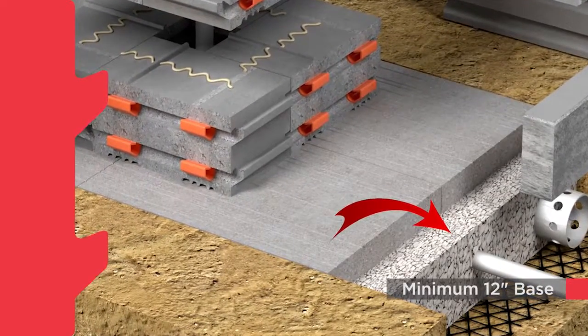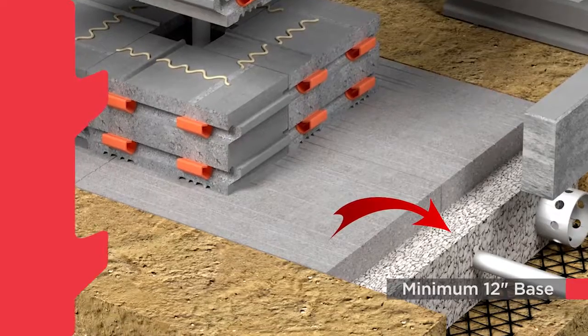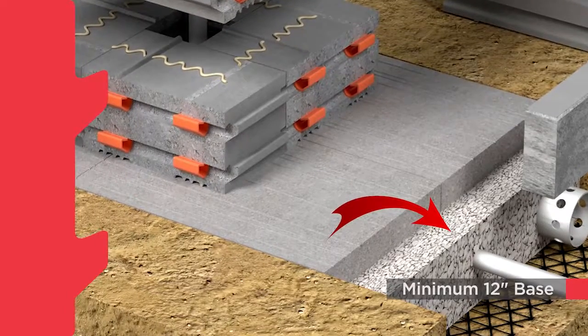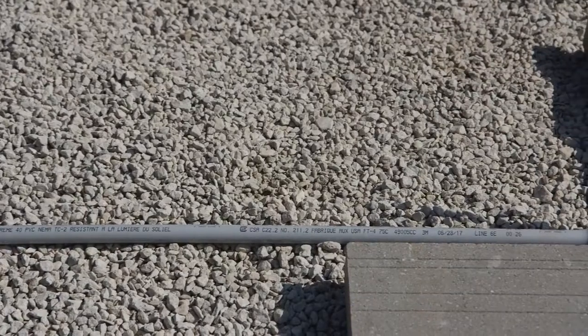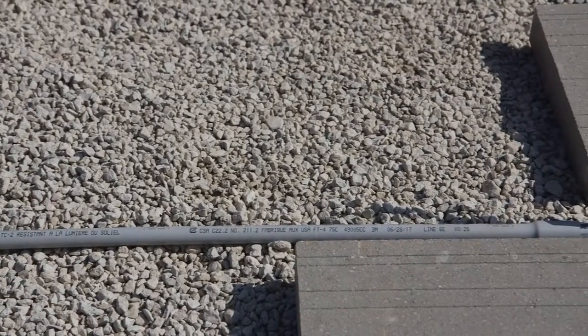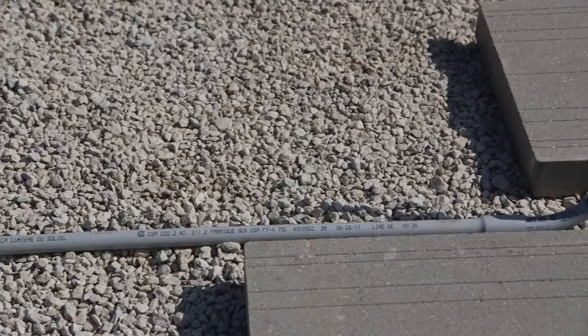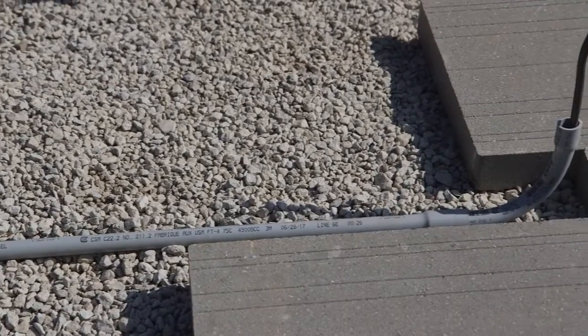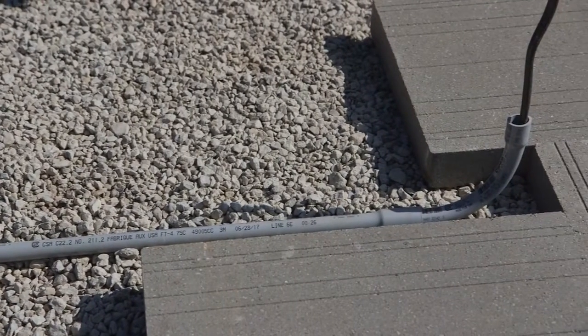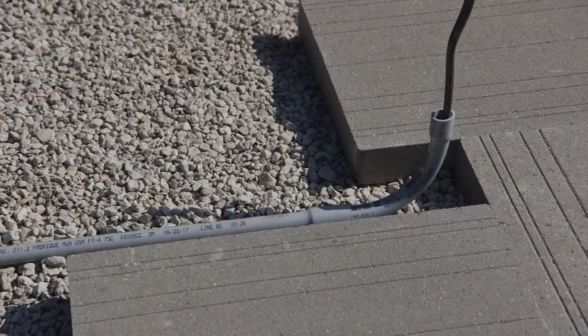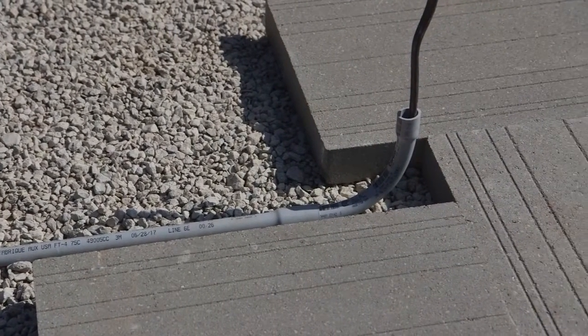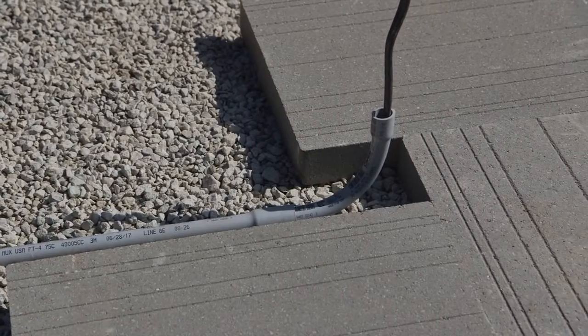We recommend a minimum of 12 inches of clear stone below the base pad. Before construction, install electrical conduits and/or irrigation lines where required. Always observe local, state, and national building codes.